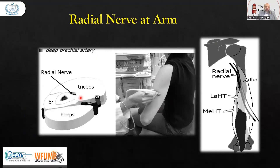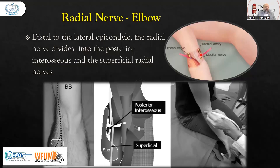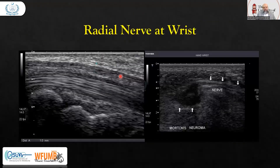At the arm, the radial nerve is seen with the triceps and brachioradialis. At the elbow, the radial nerve is here, along with the median nerve; the ulnar nerve is on the medial side of the elbow. This is the brachial artery. Distal to the lateral epicondyle, the radial nerve divides into the posterior interosseous and superficial radial nerves. Here is the radial nerve at the wrist in longitudinal section, showing a nerve with Morton's neuroma appearing from it. If we know how to scan and where, knowing normal nerve size and appearance, we can diagnose pathology.